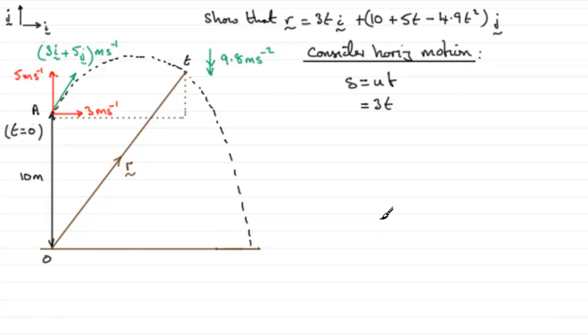Now we really want to look next at the vertical motion. So if we just write a subtitle here, consider the vertical motion. Essentially we've got to consider a SUVAT equation that's appropriate: s, u, v, a, and t.